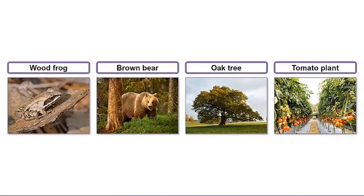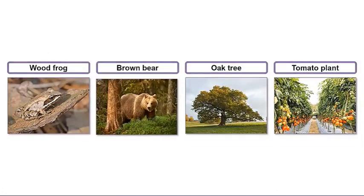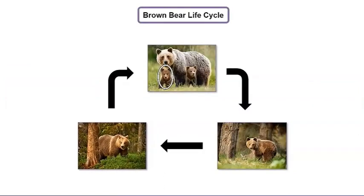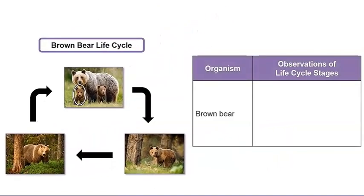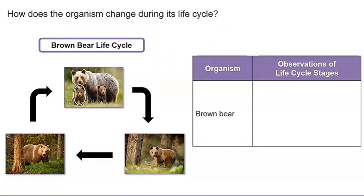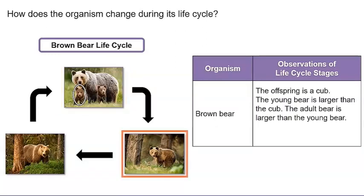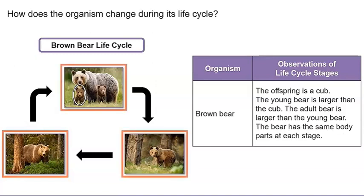Now, let's observe the life cycle of a brown bear. What do you observe about the organism at each stage? Let's record some of our observations in this chart. How does the organism change during its life cycle? The offspring is a cub. The young bear is larger than the cub. The adult bear is larger than the young bear. The bear has the same body parts at each stage.